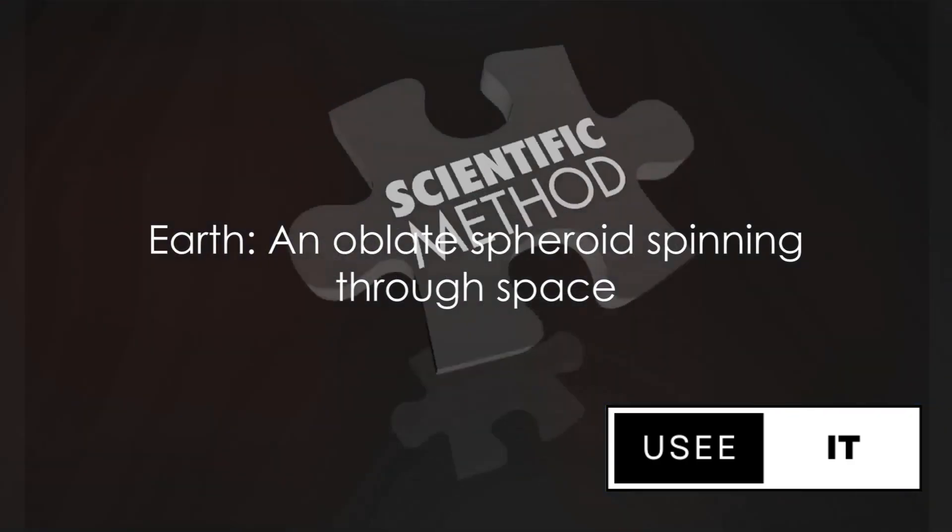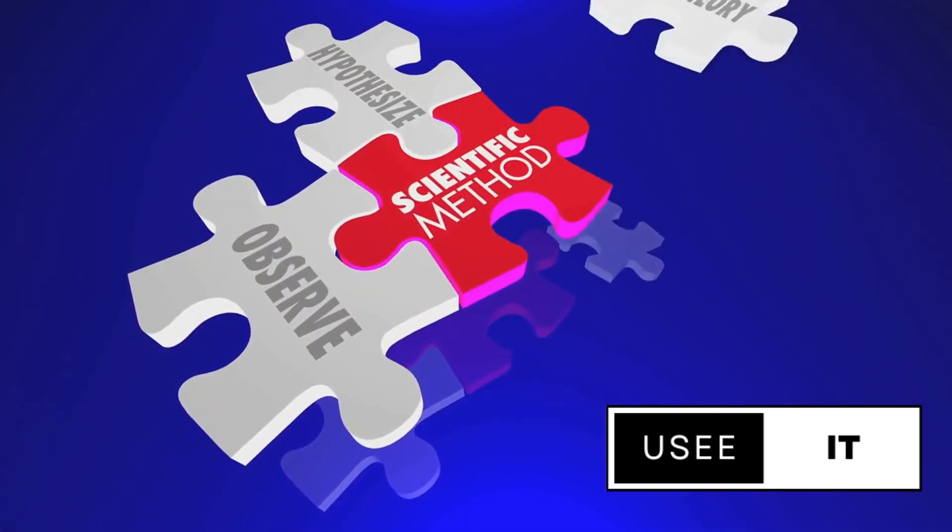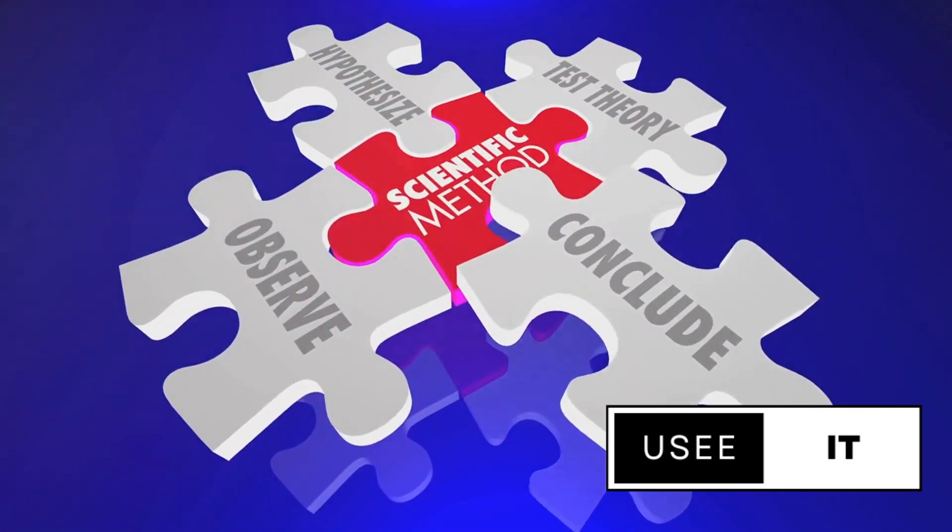So, while the idea of a flat Earth might seem appealing to some, the overwhelming weight of evidence tells us that our home is an oblate spheroid, a beautiful spinning sphere hurtling through space.